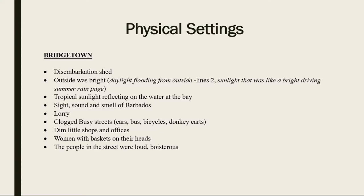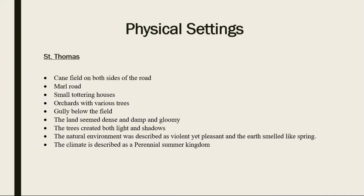Now let us look at the physical description of Saint Thomas. We see that they had cane fields on both sides of the road, a marl road, small tattering houses, arcades with various trees, gullies, and bay fields. The trees created bright light and shadows. This is the physical description of that part of Barbados, and when looking at contrast in the text these are some of the points you can mention.